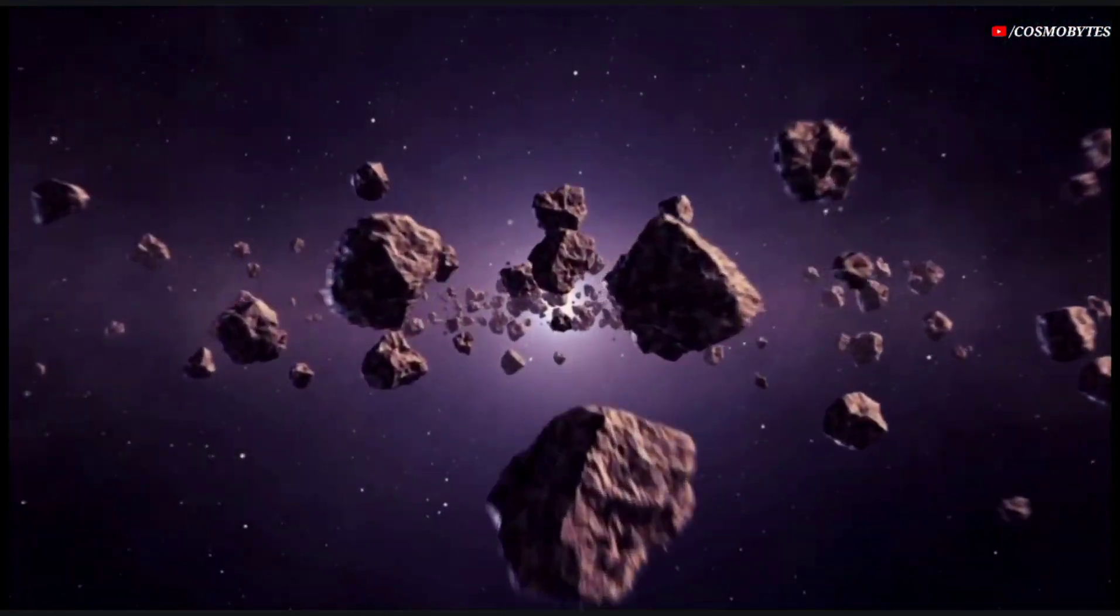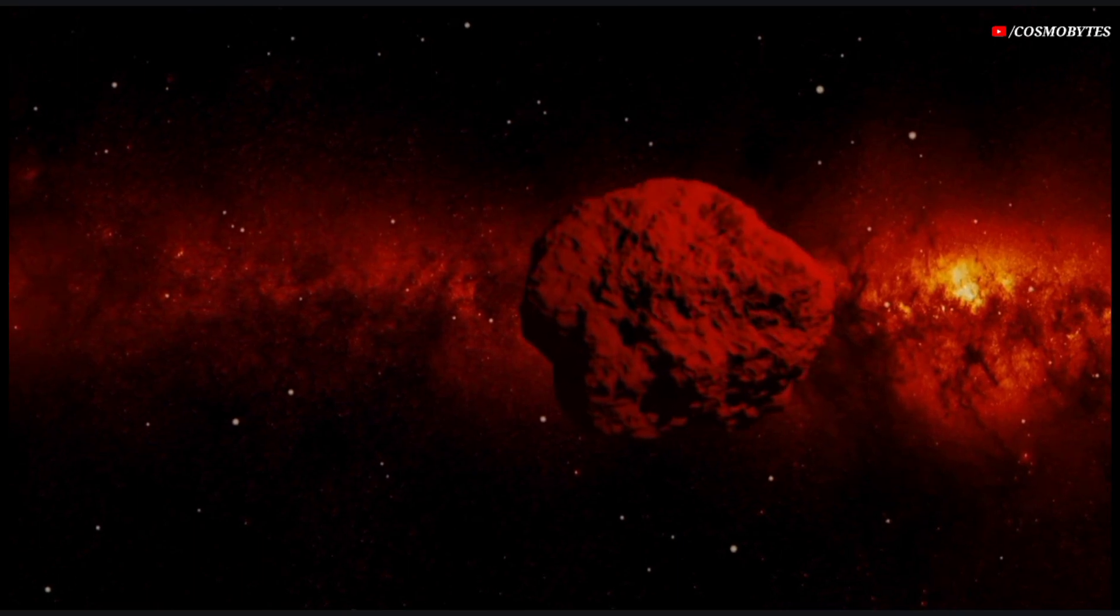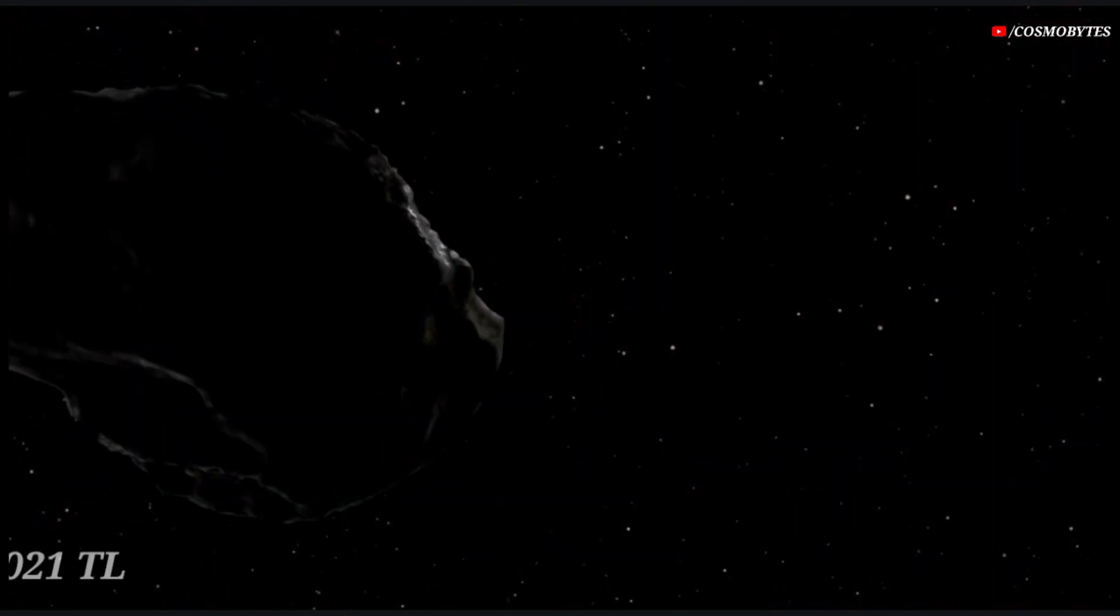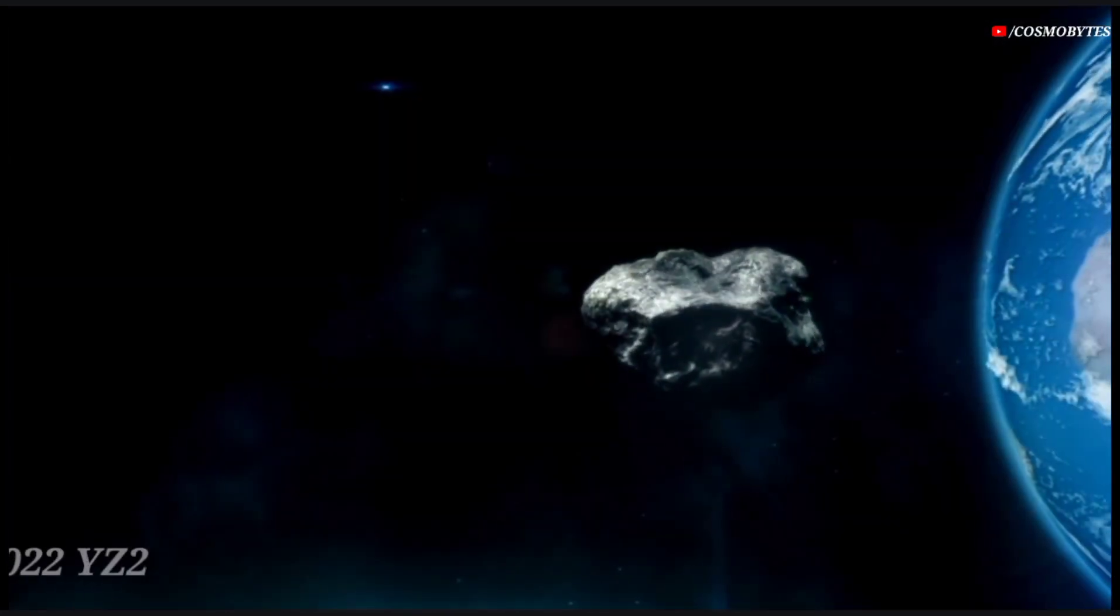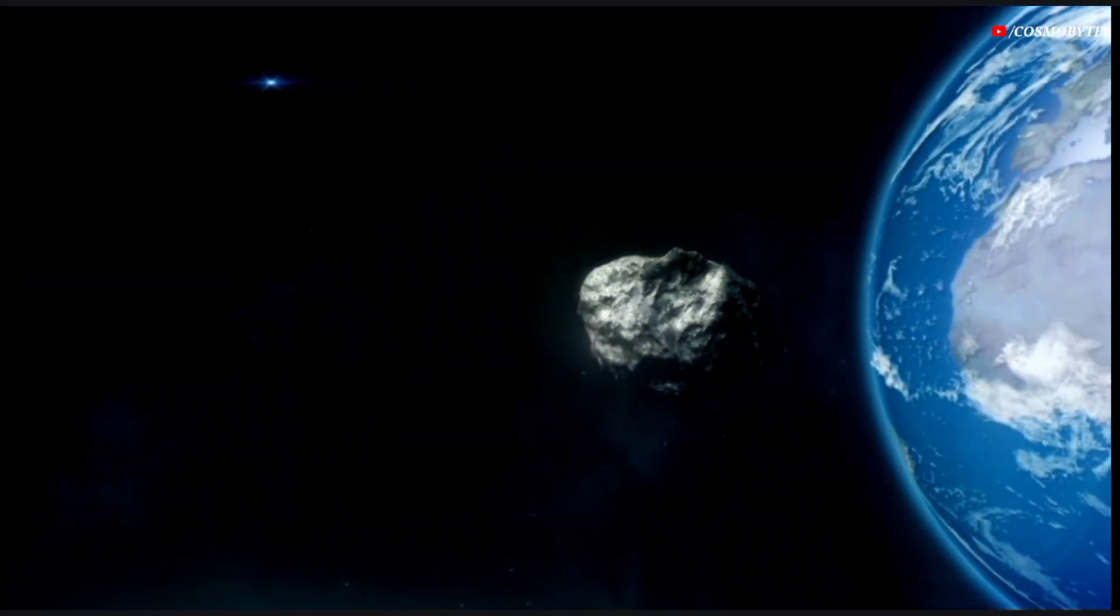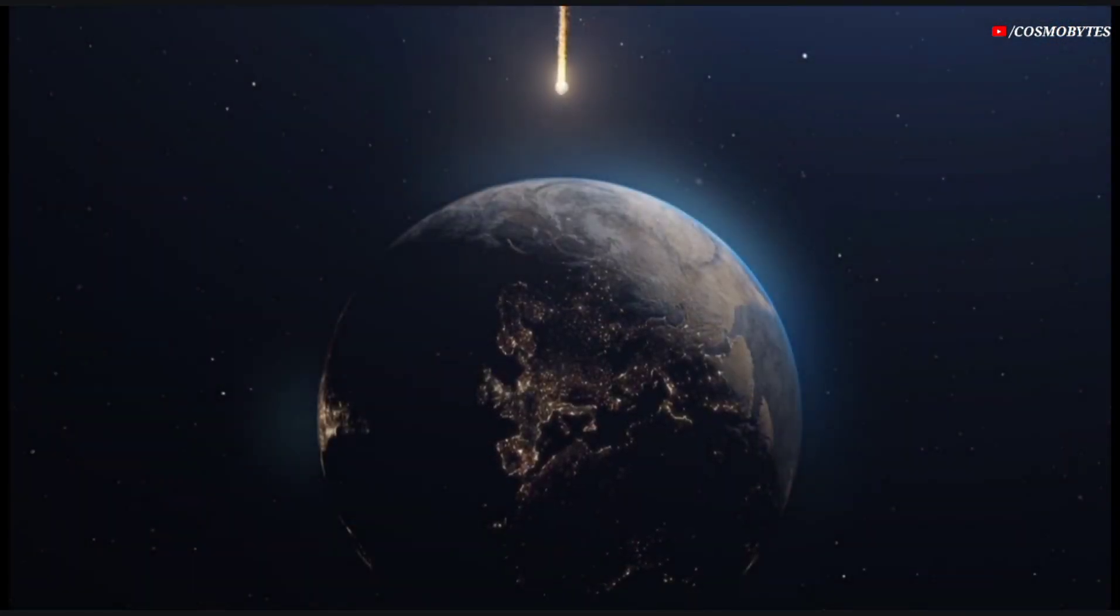NASA JPL has classified four massive asteroids passing through Earth at very high speed. Asteroid TL 2021, Asteroid 2022 YD5, Asteroid 2022 YZ2, and Asteroid 2022 YS5 as potentially hazardous asteroids due to their predicted close passes with Earth.